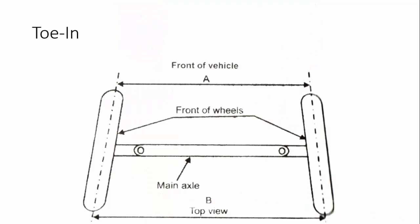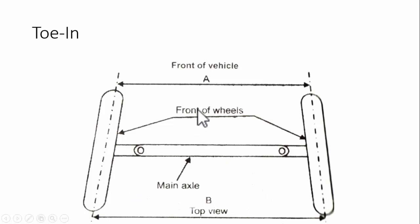The next angle is toe-in. This has to be viewed from the top. When viewed from the top, if the distance between the front side of the wheels is lesser than the distance between the rear side of the wheels, that is called toe-in. Toe-in generally stabilizes the car during straight-line running.